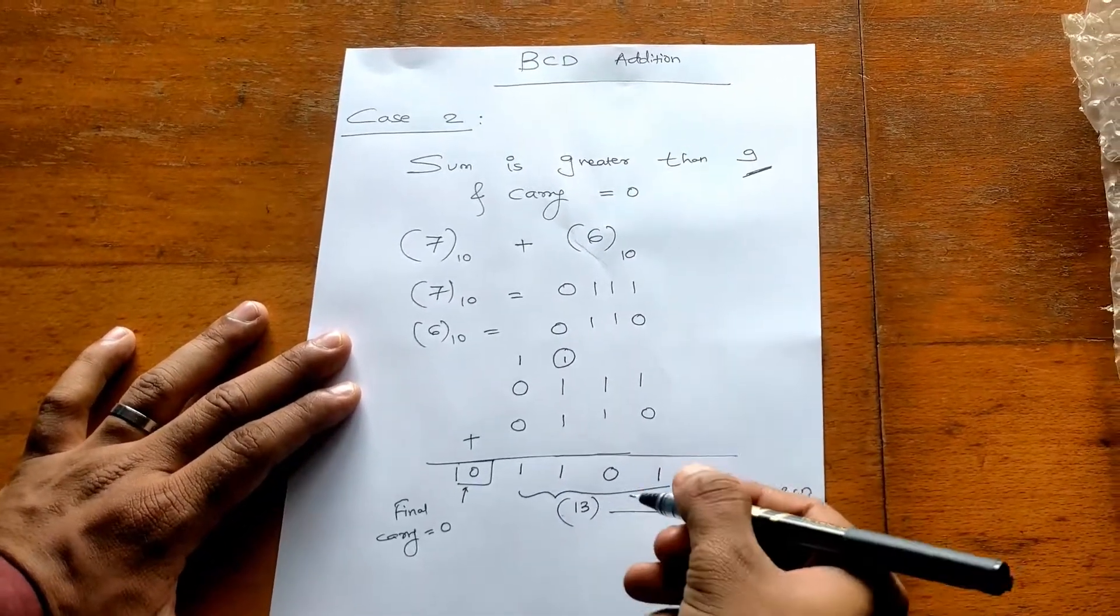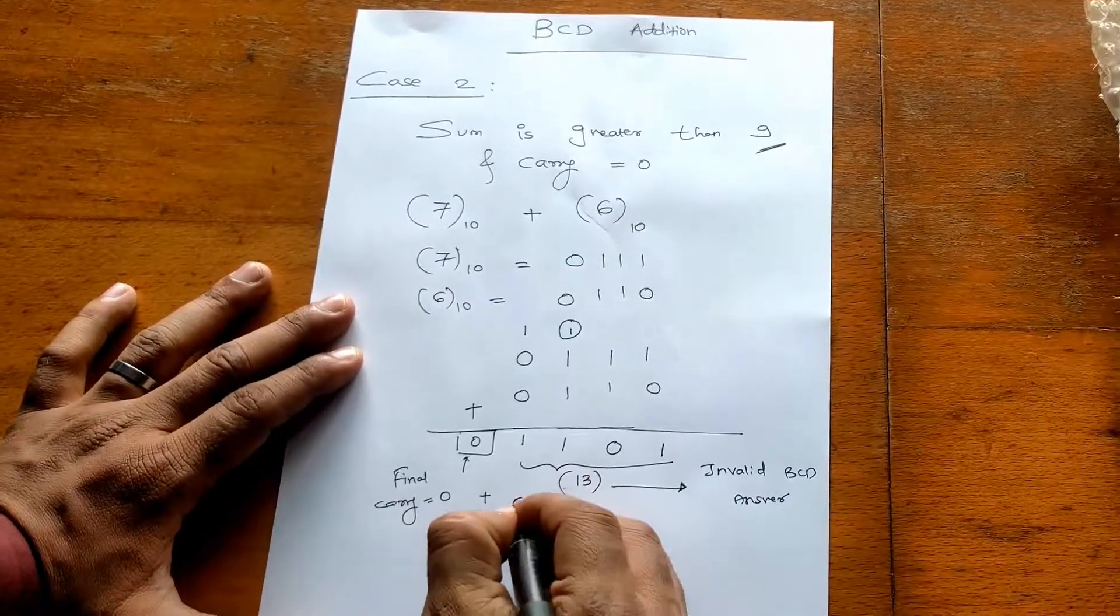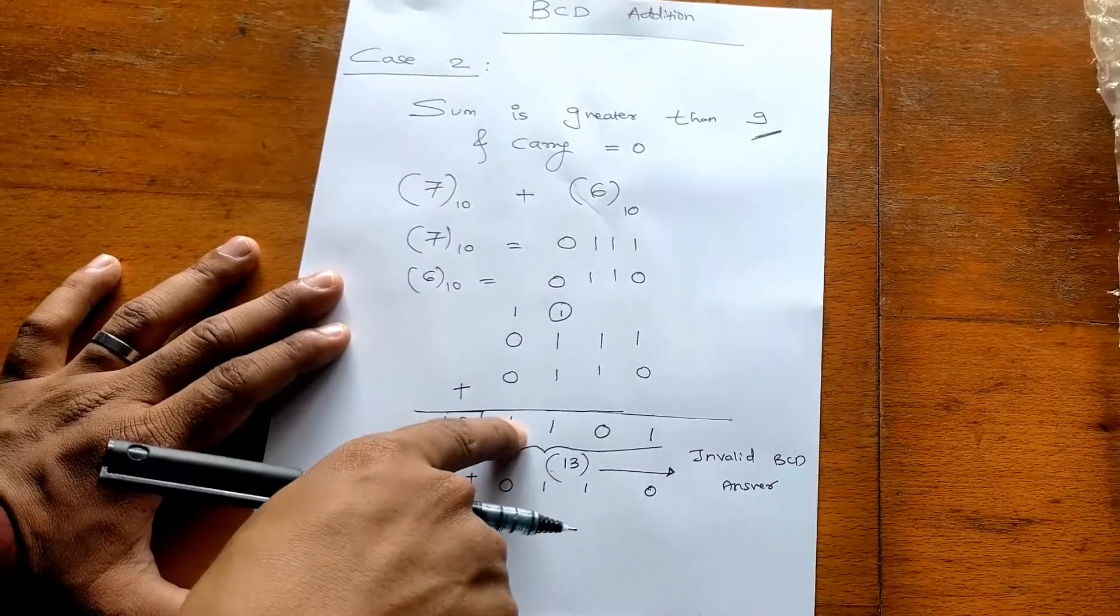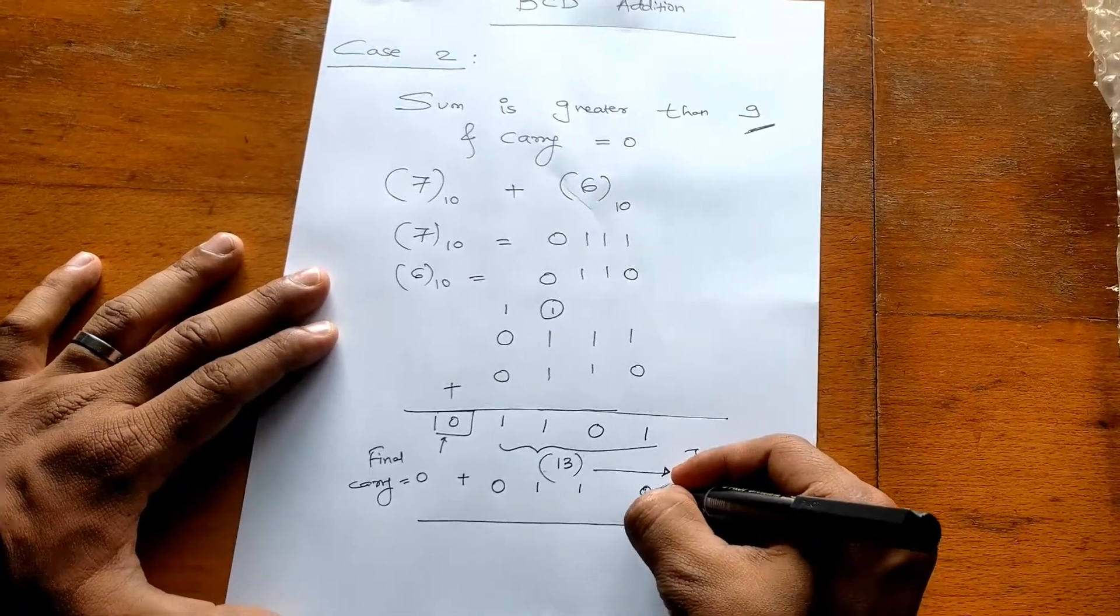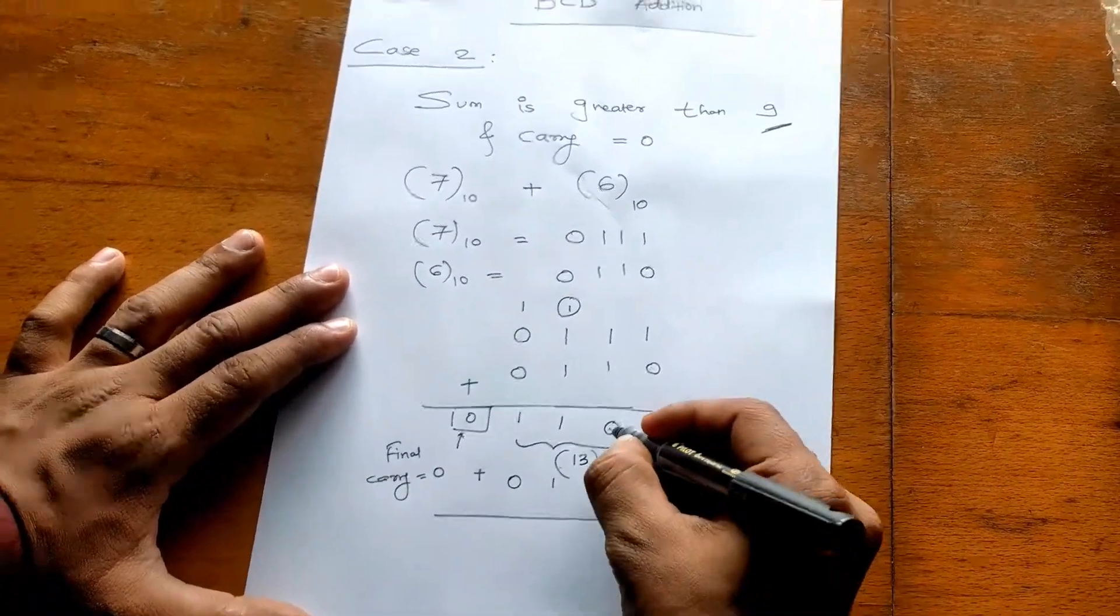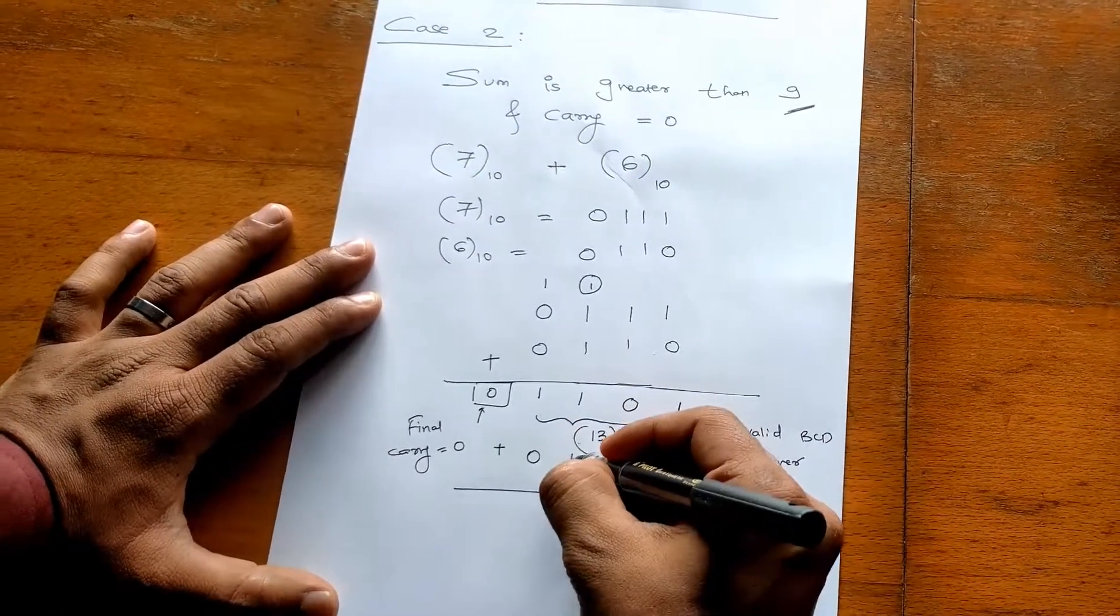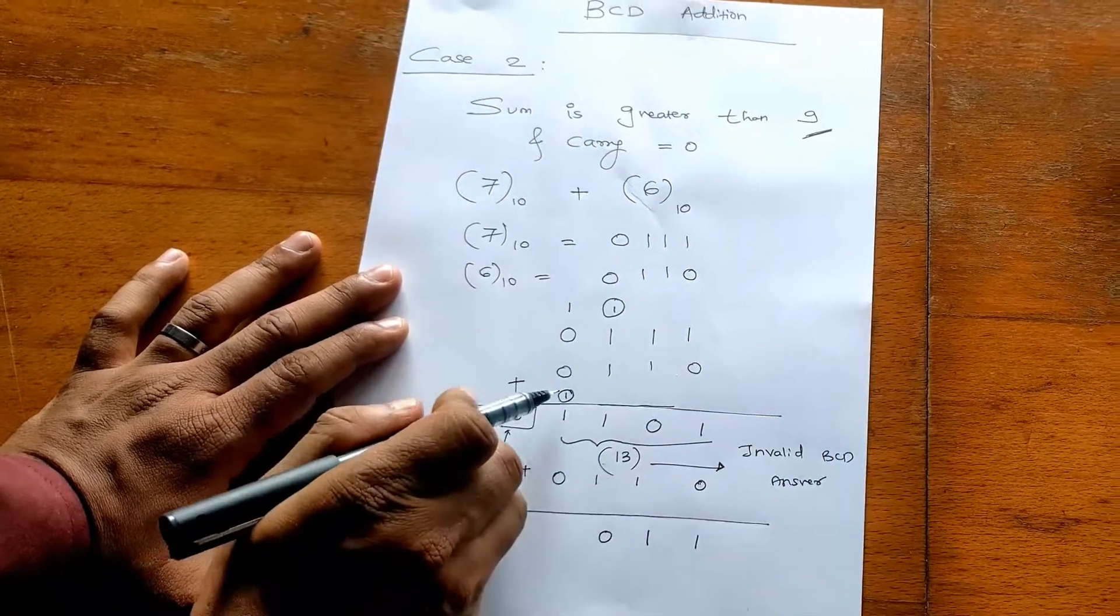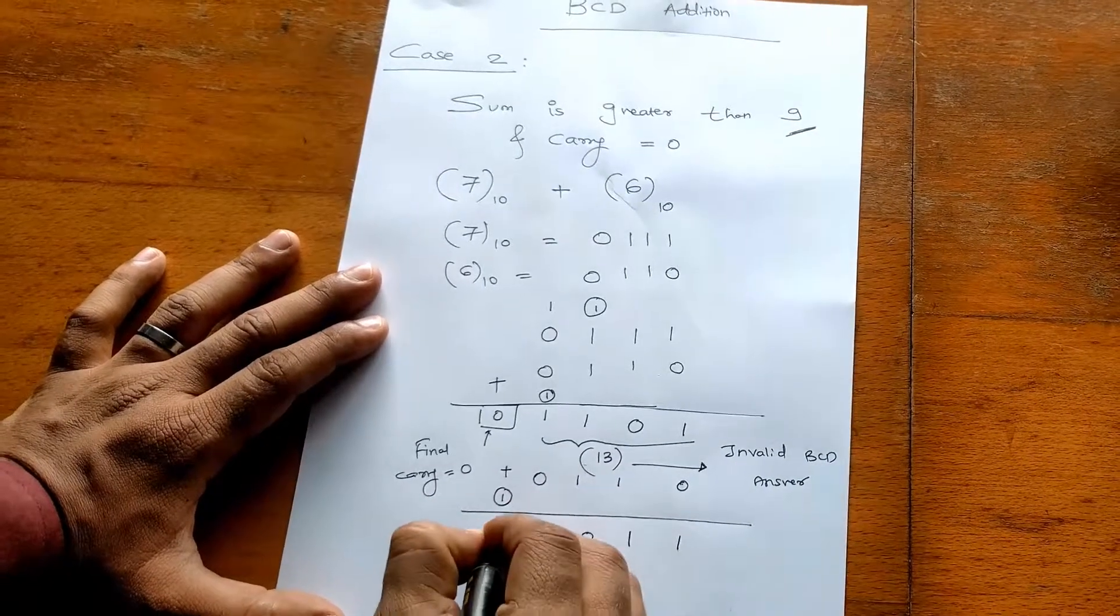So to get the correct answer, you have to add 0110 with this answer. In that case, 1100 will give you 1, 0, 1 will give you 1. 1 plus 1, answer is 0 but carry is 1. Again, 1, 1, answer is 0, and at the end carry is 1.